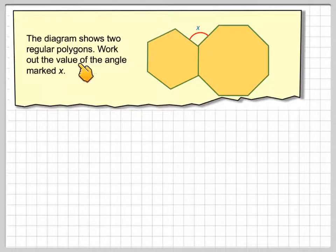The diagram shows two regular polygons. Work out the value of the angle marked X.